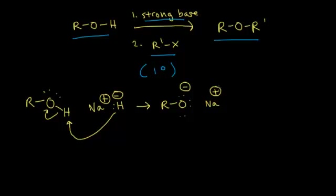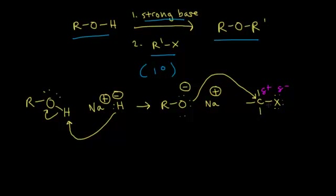Here is where you introduce your alkyl halide. There is an electronegativity difference between the halogen and the carbon, where the halogen is going to be partially negative and the carbon is going to be partially positive. That partially positive carbon wants electrons — it functions as an electrophile in the next step of the mechanism. A lone pair of electrons on the oxygen functions as a nucleophile, so opposite charges attract. The lone pair on our nucleophile attacks the electrophilic carbon, while the electrons in the bond between carbon and the halogen kick off onto the halogen.